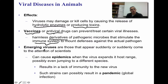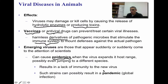We do have viruses out there that are considered emerging viruses — those that appear suddenly or suddenly come to the attention of scientists. These types of viruses can cause an outbreak called an epidemic, when the virus actually expands its host range and possibly even jumps to a different species. The result is a lack of immunity to that brand new virus. If an infection has reached the global level, then it's going to be considered a pandemic — not as isolated as it was previously.